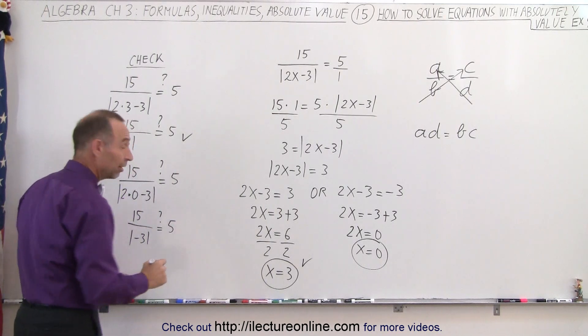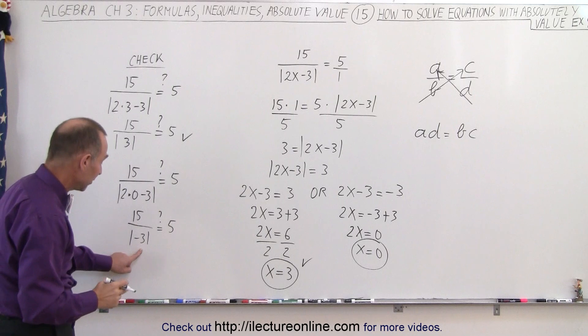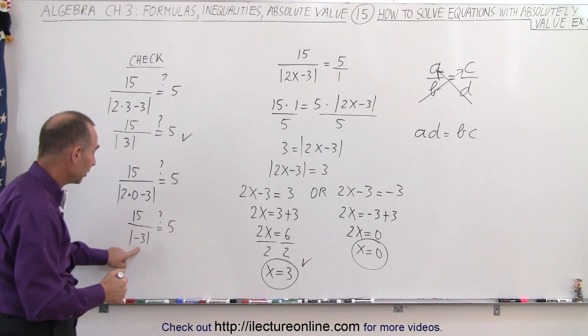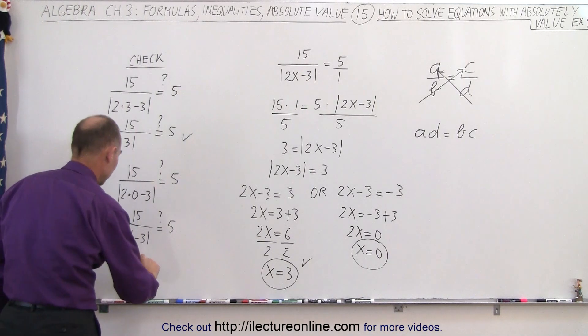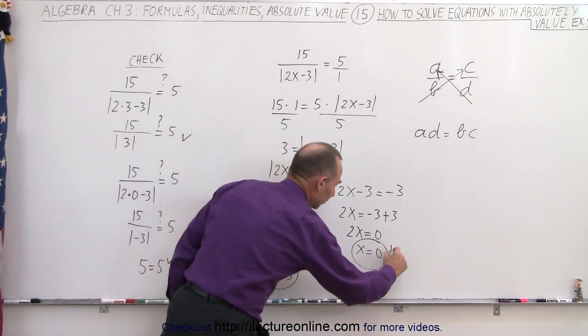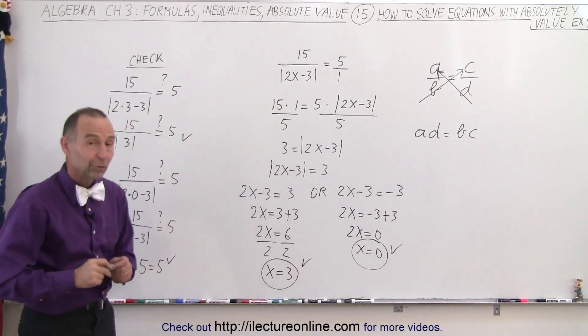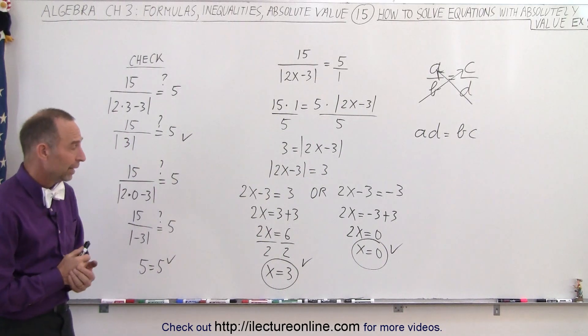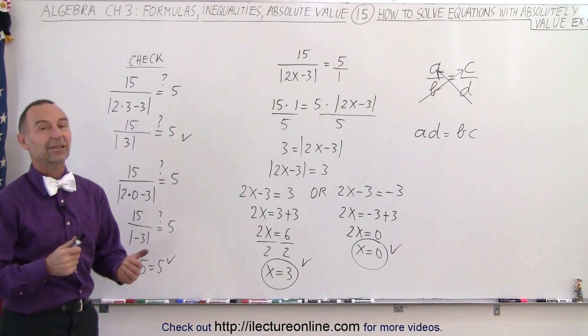Is that indeed equal to 5? And sure enough, the absolute value of a negative number is a positive number, so that's equal to 3. 15 divided by 3, we get 5 equals 5. And so since that's correct, this is correct as well. And those are the two solutions for our original equation. And that's how it's done.